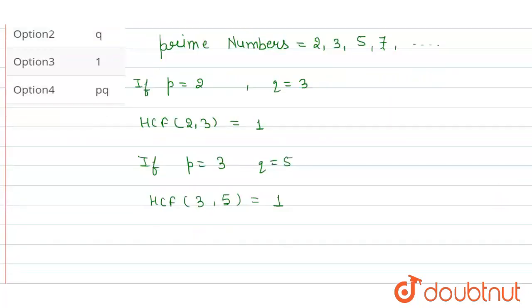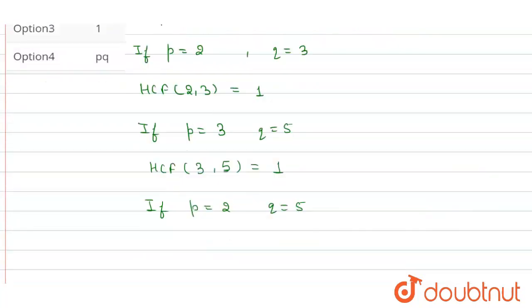Let's take another example. If I put P equal to 2 and Q equal to 5, then the HCF is HCF of 2 and 5, which is equal to 1.